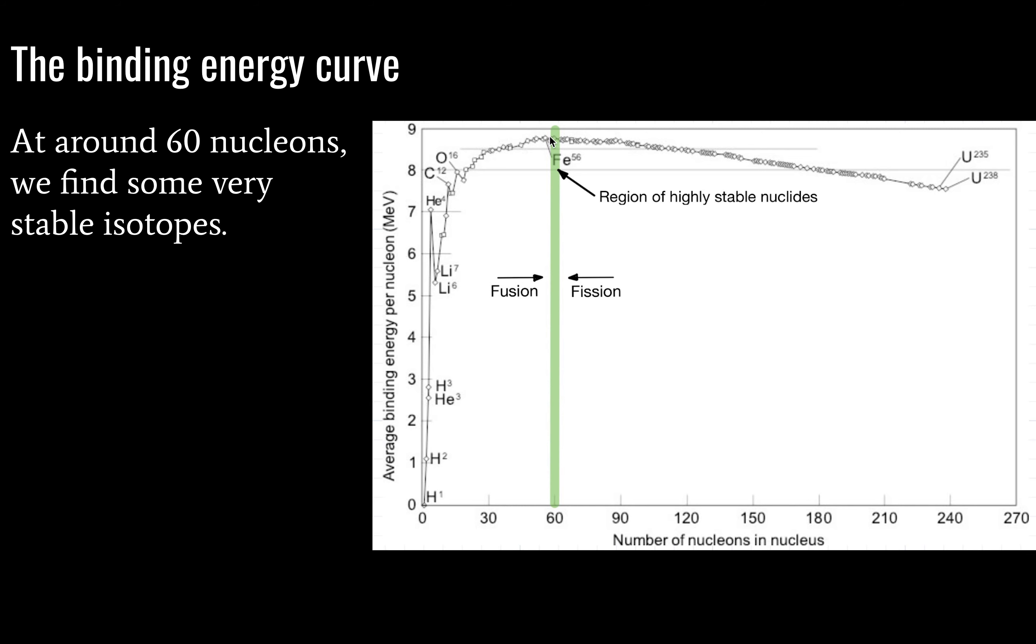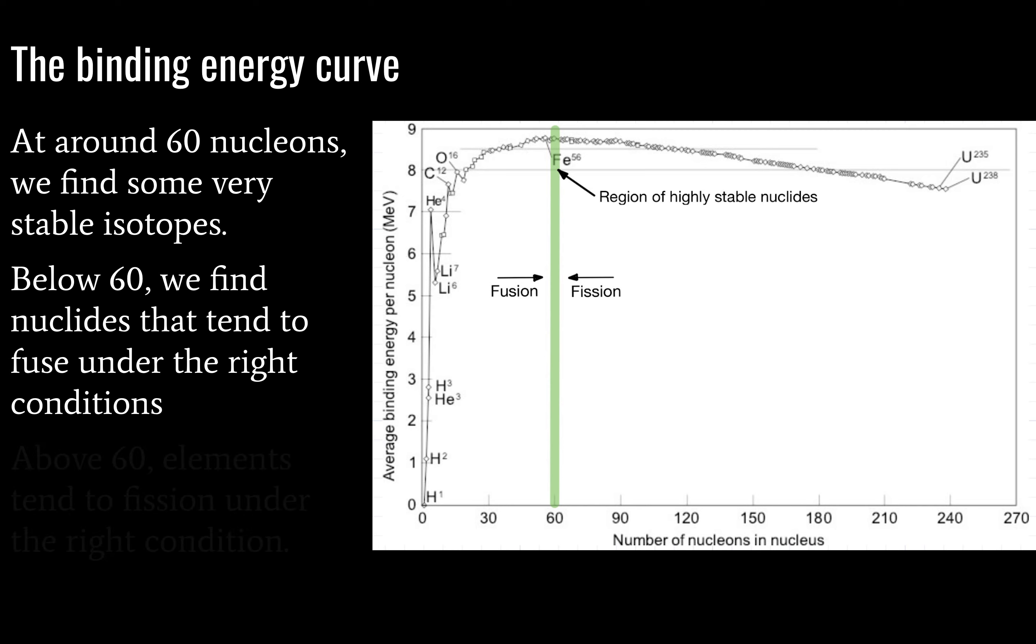This chart is useful because we can predict what is likely to happen with our isotopes based on the number of nucleons. At around 60 nucleons, we have a very stable region of isotopes here where these guys are unlikely to either decay or fuse into other stuff. In fact, if you look at solar fusion, this area is kind of the stopping point for fusion in the sun. Below 60, we find nuclides that are going to fuse under the right conditions, for example, being in the heart of a star. And above 60, we have elements that will tend to fission under the right condition. And the right condition is generally just existing for long enough to decay.